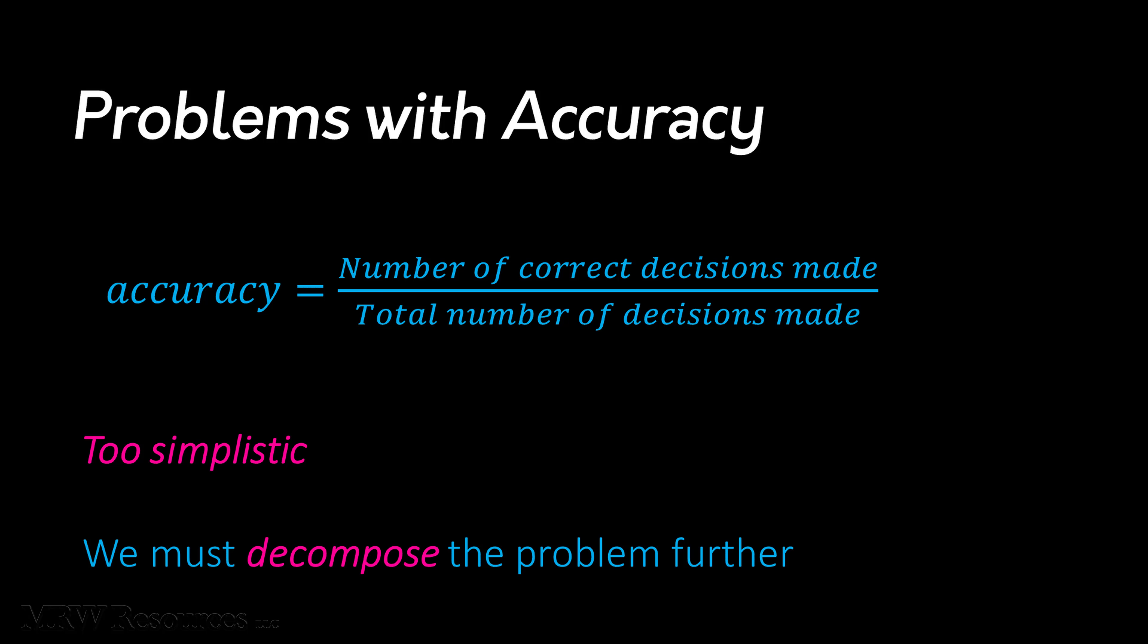Why is that? As we've alluded to already, the type of mistakes a model makes is a huge consideration in how you view it. Which correct or incorrect decisions are most critical? In order to gain insight into the performance of your model, you need to drill down a bit deeper. To do this, we can decompose the problem and count the different types of correct and incorrect decisions made by a classifier.